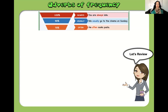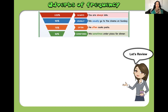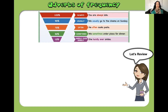Often — 'He often cooks pasta' — that would be around 70% of the time. Sometimes — 'We sometimes order pizza for dinner' — that would be maybe half of the time, or 50% of the time. She hardly ever smiles — that would be maybe 10% of the time. That's a pity.